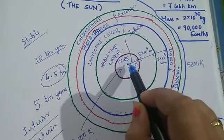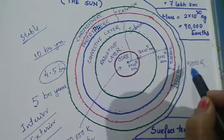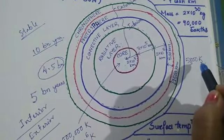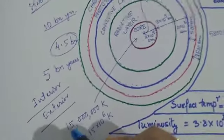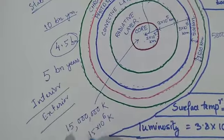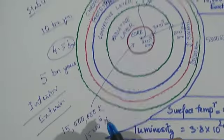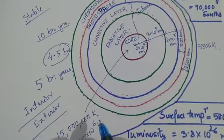I told you that at the surface we see a temperature of around 5800 Kelvin. But interestingly, the core has a temperature of how much? 15 million Kelvin - that's 15 into 10 to the power 6 Kelvin. Can you imagine how high the temperature is?